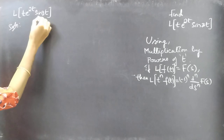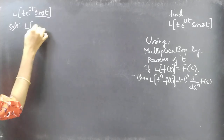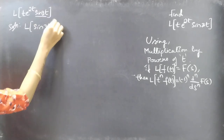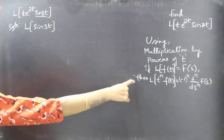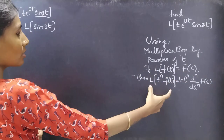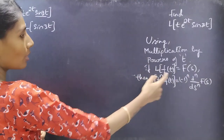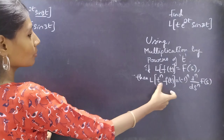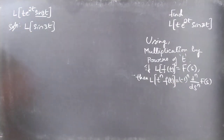Firstly we'll apply the multiplication by powers of t formula. The formula states: if L{f(t)} = F(s), then L{t^n · f(t)} = (-1)^n · (d^n/ds^n) F(s).